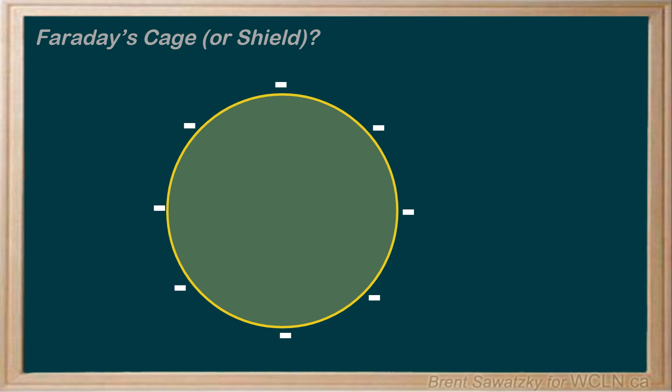So we've reached equilibrium now and the electrons have settled into position. What do the resulting electric field lines around this conductor look like? Electric field lines are always shown as going away from a positively charged area and towards a negatively charged area. So we'll draw our electric field lines — they're perpendicular to the surface of our sphere. And because the charge is spread out evenly around the surface, the electric field lines would be evenly distributed as well.